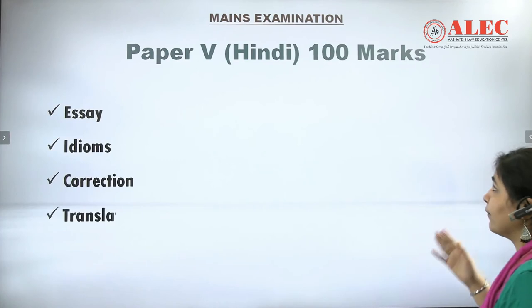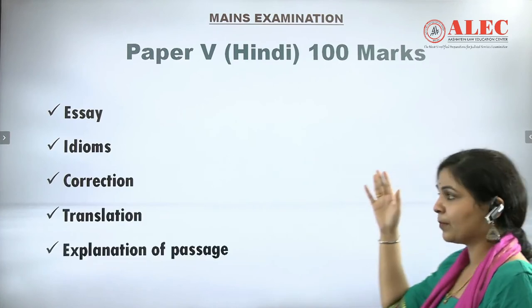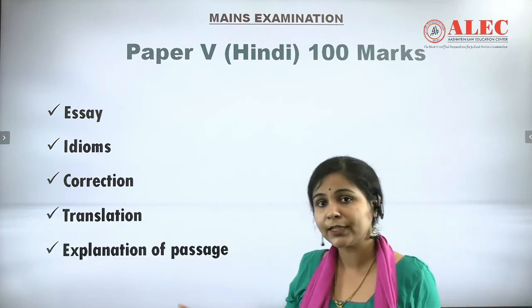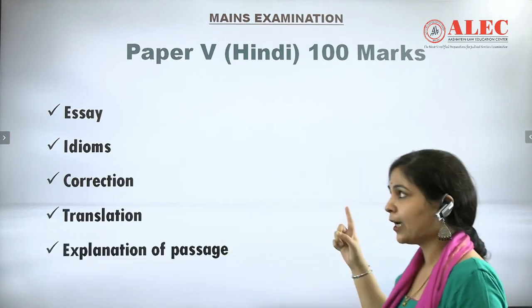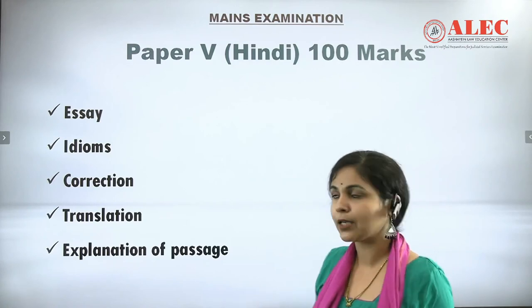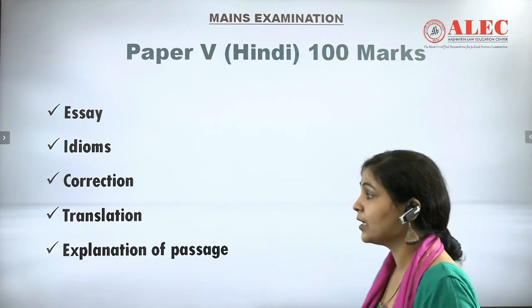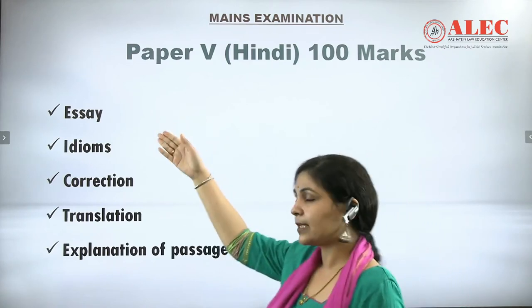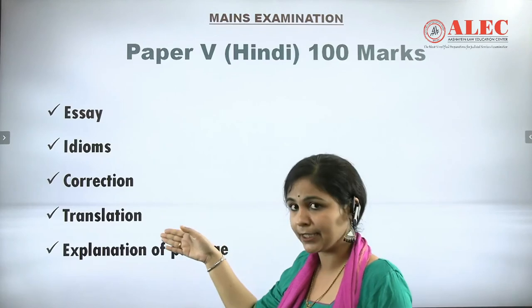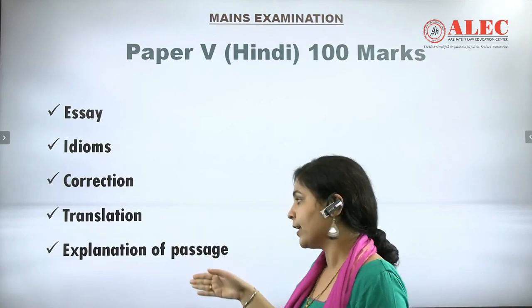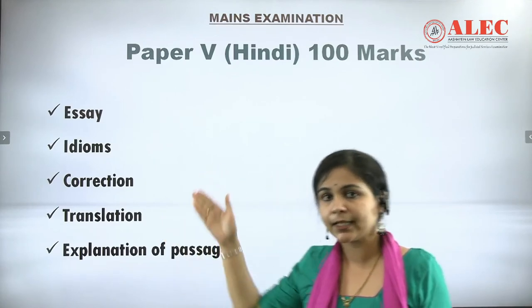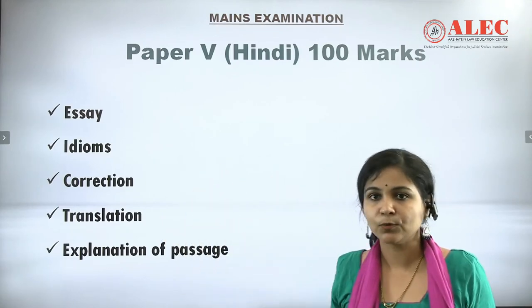Paper 5 is the Hindi language paper, carrying 100 marks. The remaining four papers were 200 marks each, making the total 900 marks. In the Hindi paper, a topic will be provided for essay writing. Other areas include idioms, corrections, translation, and explanation of a passage.